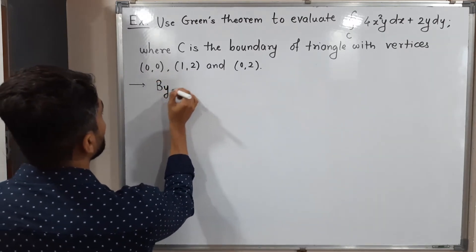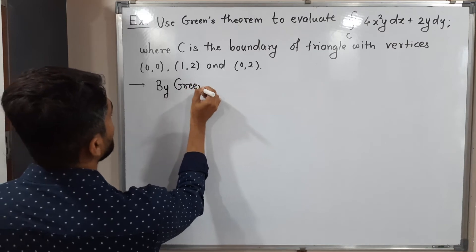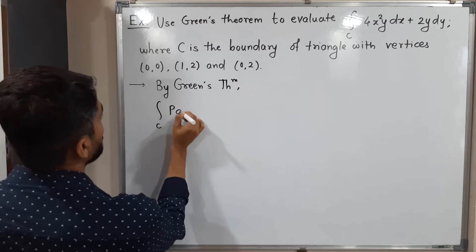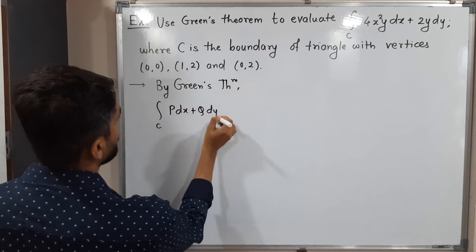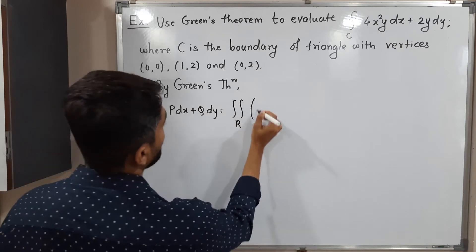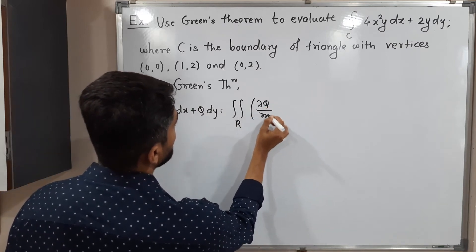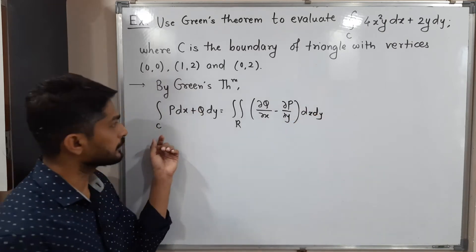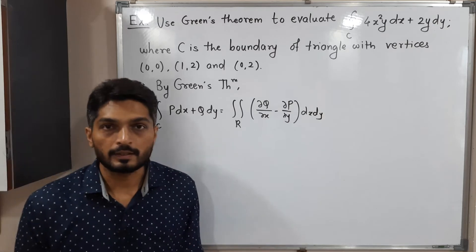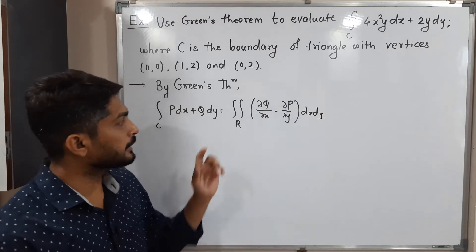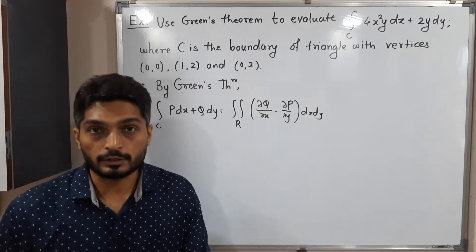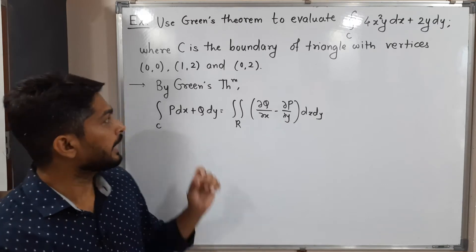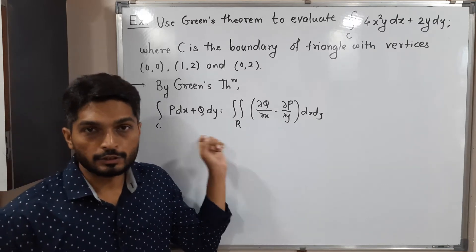By Green's theorem, the statement says: integration over C of P dx plus Q dy is equal to double integration over R of (∂Q/∂x minus ∂P/∂y) dx dy. Here, the line integration over C means the boundary of that region, and double integration over R means over the actual region whose boundary is C.